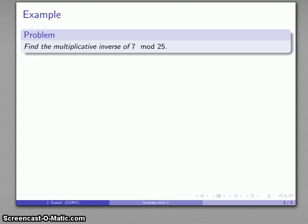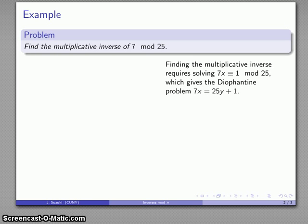Let's take a look at a simple example. Find the multiplicative inverse of 7 mod 25. Now, what that means is I need to try and solve the equation 7x is congruent to 1 mod 25. And what that corresponds to is a Diophantine problem. Remember, 7x is 1 more than a multiple of 25. So I can write this as 7x equals 25y plus 1, where I'm looking for positive integers x and y.